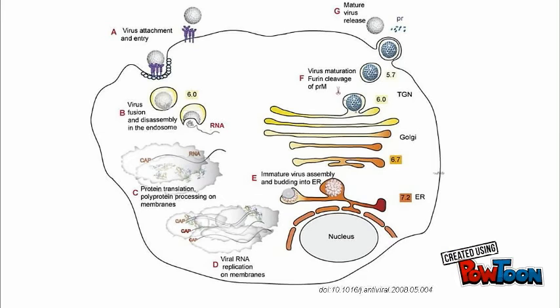The virus first attaches to the cell membrane and then enters the cell. The virus then fuses into the endosome and breaks apart into RNA strands. Please note that the pH of the endosome is 6, and this is very important because the fusion of the virus is dependent on this pH.